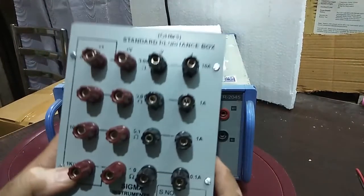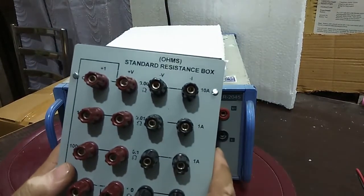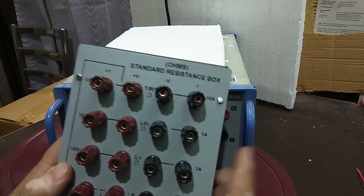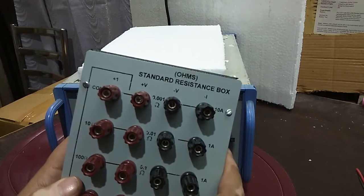The standard resistance box is of Sigma make. Mutwani don't make these type of things. By this you can also check that your micro-ohm meter is working all right or not.